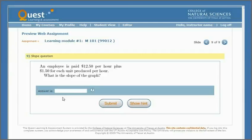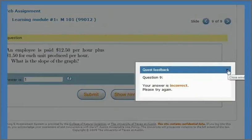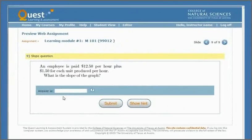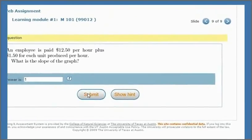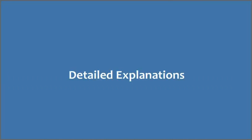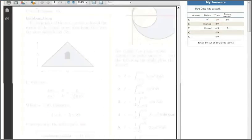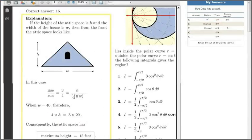Students using the system are able to get immediate feedback when they answer a question. If they miss a question, this allows them to refine their understanding of a given concept before moving on to new concepts. Once solutions are available, students can read detailed explanations to questions and understand why their answer was correct or incorrect.